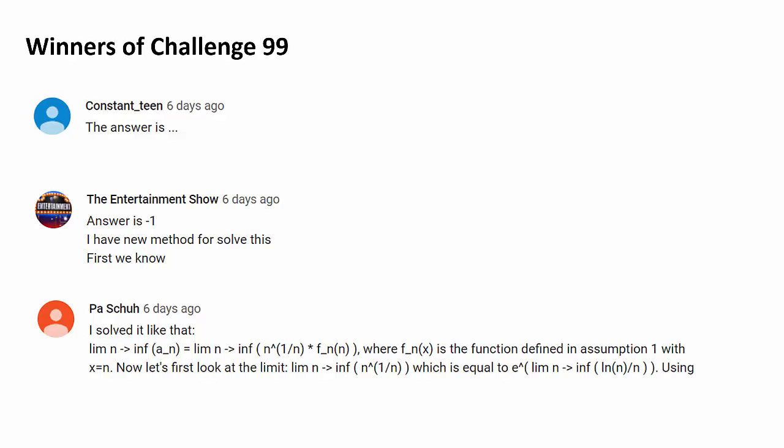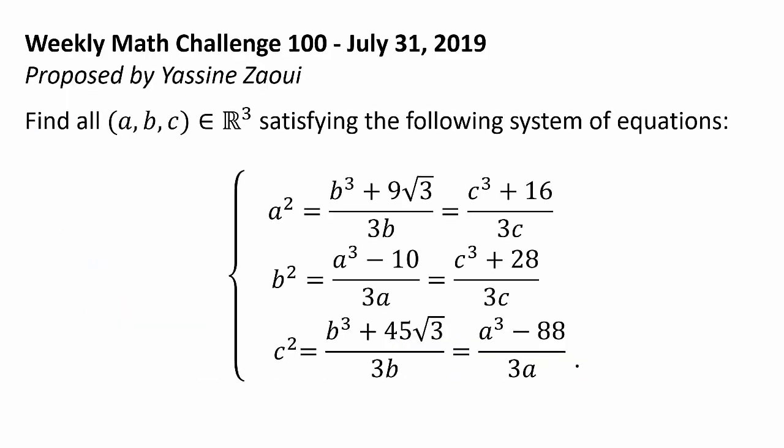So after 99 weeks of butchering names, we have arrived at the 100th challenge, which was proposed by Yasin Jaoi. And the problem is: find all ordered triples ABC where ABC are all real numbers satisfying the following system of equations.